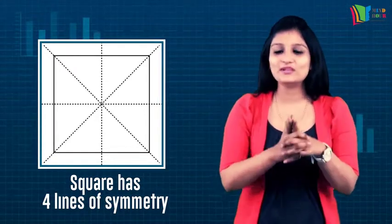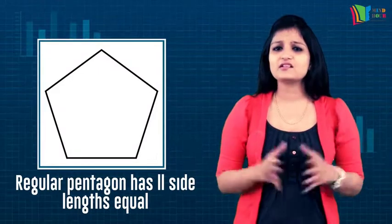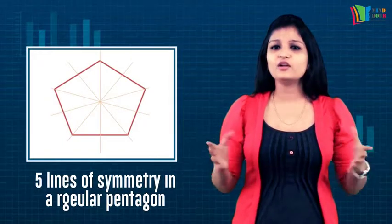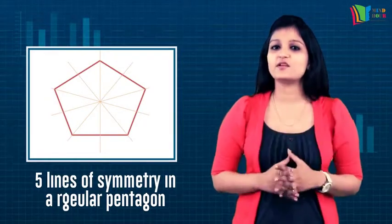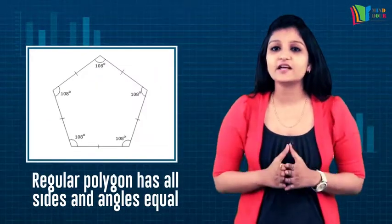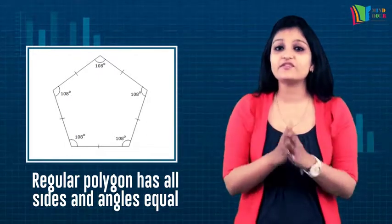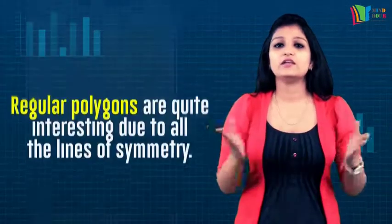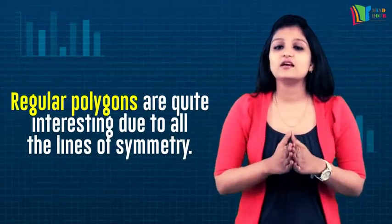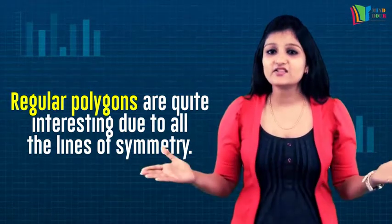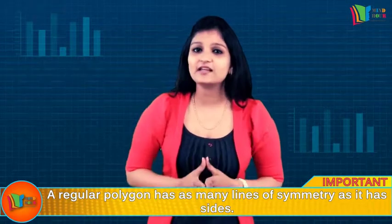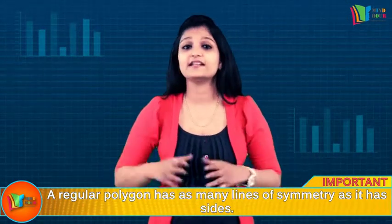Remember, a square has four lines of symmetry, not eight — be careful to only count each line once. If a pentagon is regular, naturally its sides should have equal length. A regular pentagon has five lines of symmetry; it also has five angles of equal degrees and five sides of equal length, making it a regular polygon. The regular polygons are symmetrical figures, and each regular polygon has as many lines of symmetry as it has sides. We say they have multiple lines of symmetry.